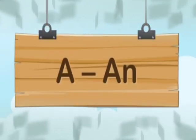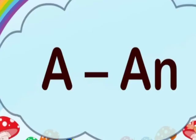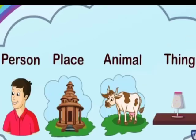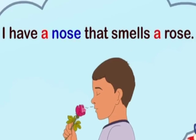We use A or AN before a naming word that shows one person, place, animal or thing. Children, naming words are nouns and we already studied about nouns, such as: I have a nose that smells a rose. Here, we are using A before nose and rose, which are naming words.